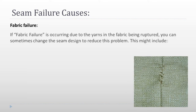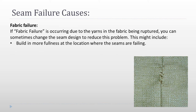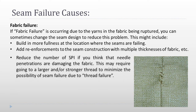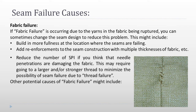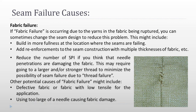Fabric failure: if fabric failure is occurring due to the yarns in the fabric being ruptured, you can sometimes change the seam design to reduce this problem. This might include building in more fullness at the location where the seams are failing, adding reinforcements to the seam construction with multiple thicknesses of fabric, reducing the number of SPI if needle penetrations are damaging the fabric, and using a larger or stronger thread to minimize seam failure. Other potential causes of fabric failure might include defective fabric or fabric with low tensile strength for the application, or using too large a needle causing fabric damage.